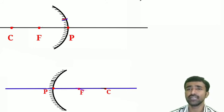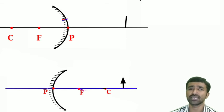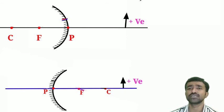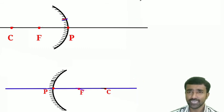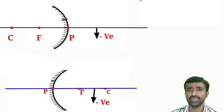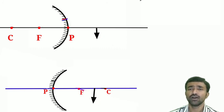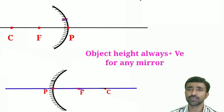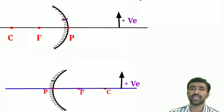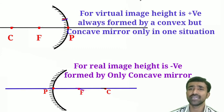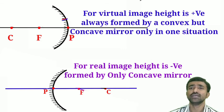For object height and image height: any measurement taken above the principal axis is positive; below the principal axis is negative. Object height is always positive for any mirror because the object is always placed above the principal axis. For a real image, image height is negative; for a virtual image (erect image), image height is positive.